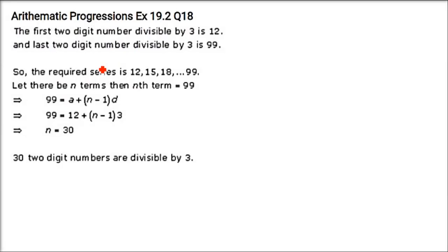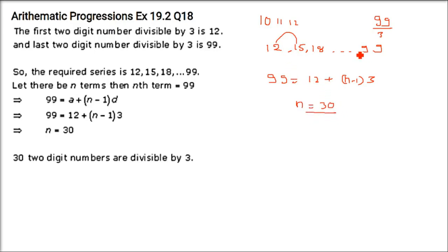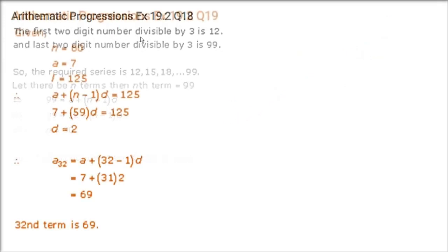How many 2-digit numbers are divisible by 3? The first two-digit number divisible by 3 is 12, and the last is 99. So you have the series 12, 15, 18, ... 99. Using the last term formula: 99 equals 12 + (n−1)·3, where d equals 15 minus 12 equals 3. Solving, n equals 30. So 30 two-digit numbers are divisible by 3.